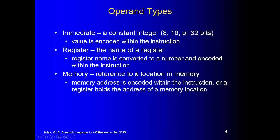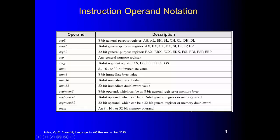Memory references a location in RAM. Whenever we declare a variable, the computer is going to allocate a memory space for us. This is the instruction operand notations. You can use an 8-bit, 16-bit, or 32-bit register. Immediate values can be 8-bit byte, 16-bit word, or 32-bit double word values. For variables, same thing: 8-bit, 16-bit, or 32-bit.